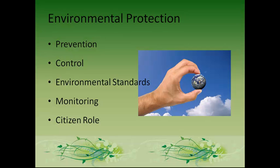Environmental protection includes several key items. Prevention is the most basic intervention, requiring continuous teaching — things like immunizations, STD education, and disaster preparedness. Control involves monitoring the community's process for controlling pollution and saving resources. Environmental standards control pollution rates. Monitoring includes EPA standards that are assessed. And the citizen role is important — informed citizens can create change.